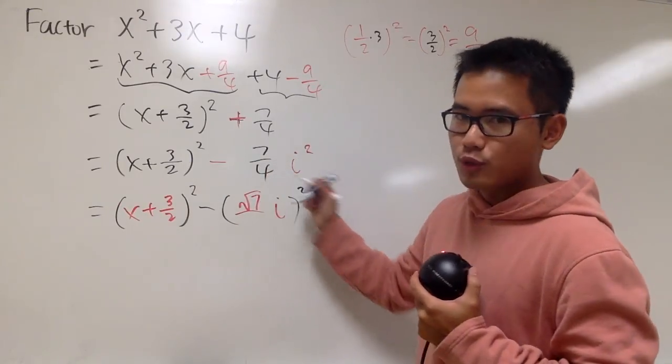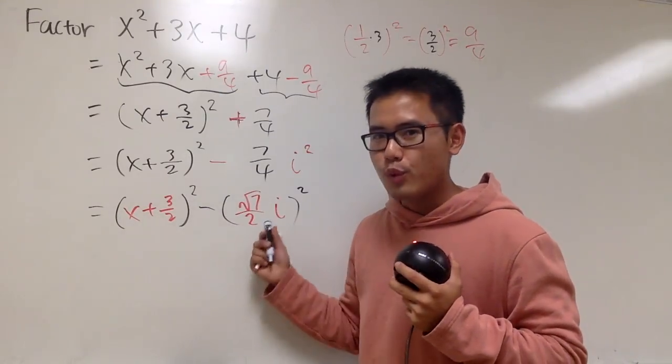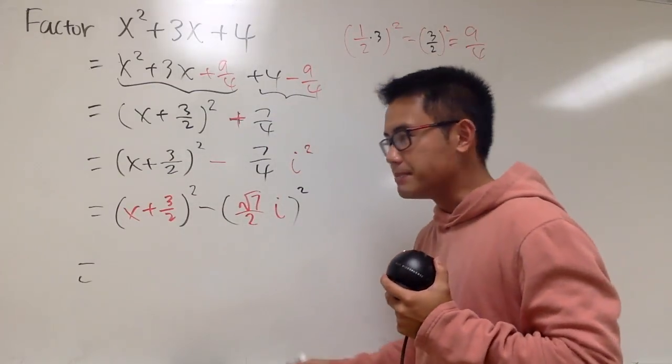And I need to have a 4, so what do I need? I need a 2, right? And now, you see, this is the difference of two squares. a squared minus b squared, we know how to factor that. So it's going to be a minus b times a plus b.